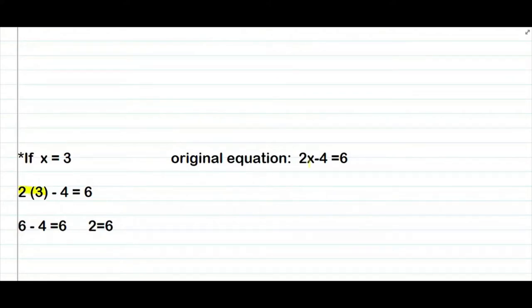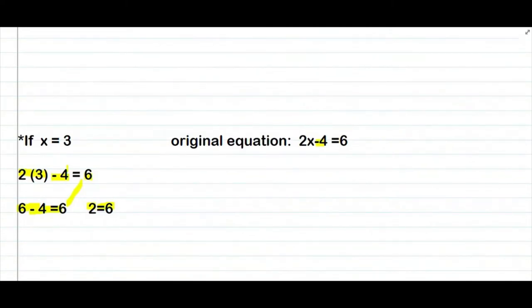Ikakapi itong minus 4, copy mo itong minus 4 then equals to 6. Ang mangyayari is 2 times 3 is 6, then minus 4, equals to 6. Ang mangyayari is 6 minus 4 is equals to 2, then equals to 6. Kung titignan mo, ang meaning ng equation kanina is kailangan equal yung left side sa right side. Hindi siya equal — ibig sabihin, yung 3 na ginamit natin na pang substitute sa x is mali.